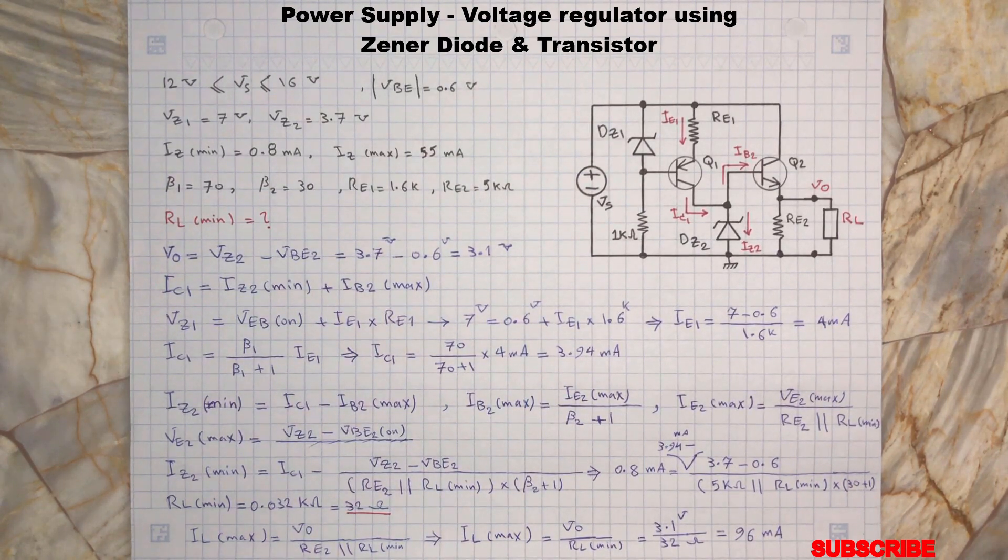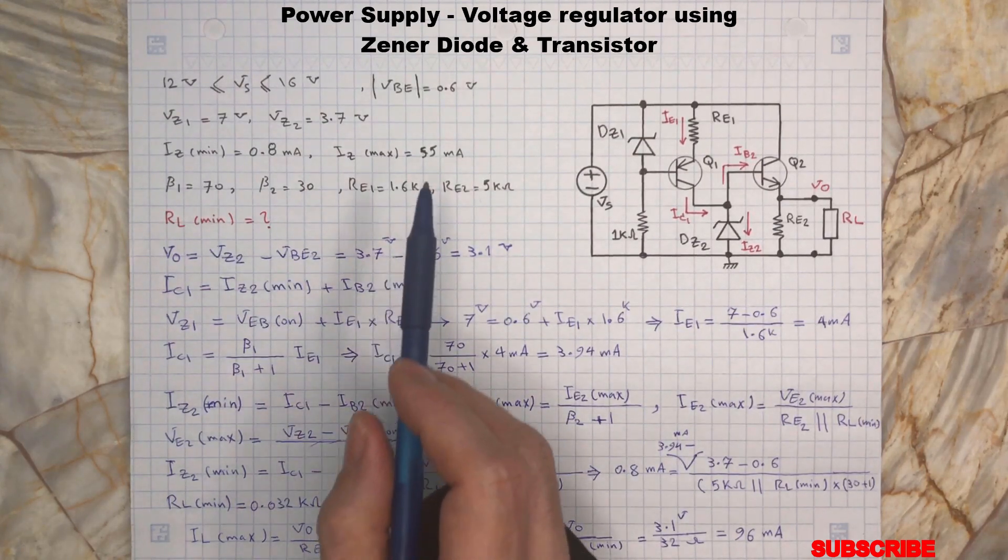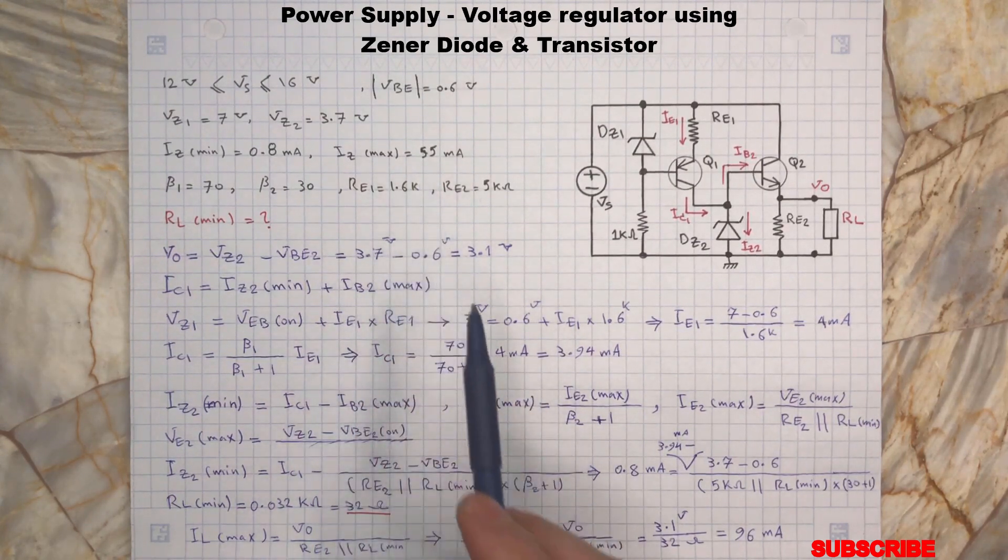So, this circuit can provide 96 milliamp of current at 3.1 volt regulated voltage. Please note that because of this design configuration, increasing the load resistance won't affect the output voltage. This is because IC1 minus IB2 is the highest current value the Zener diode 2 can get and that is always within the Zener maximum current threshold, which is 55 milliamp.